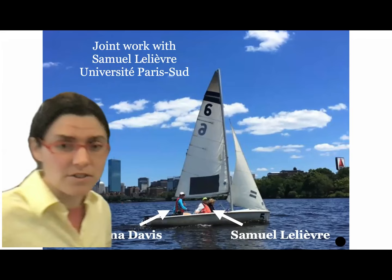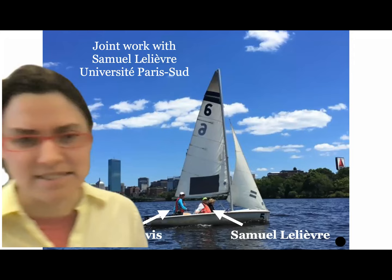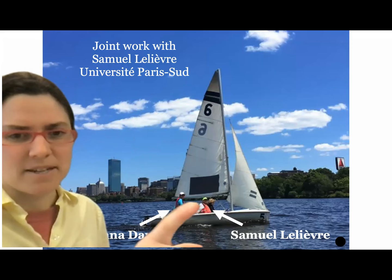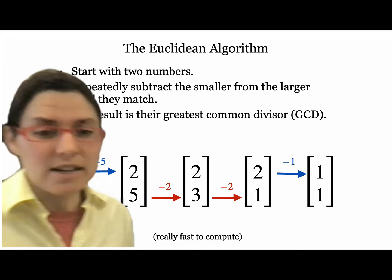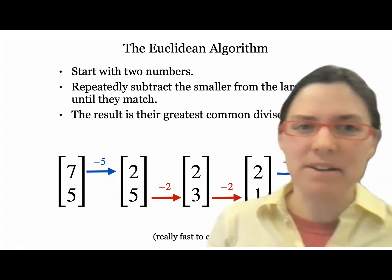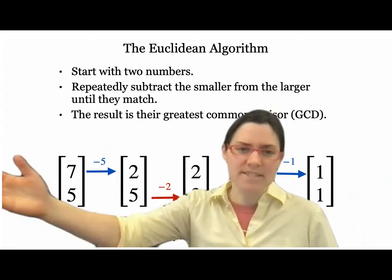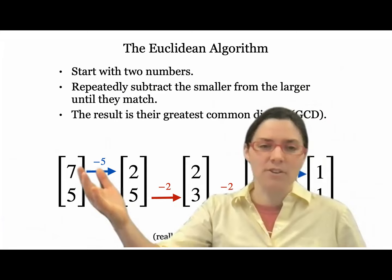All the work in this talk is joint work with Samuel, who's at his university — I just visited him for my spring break in March. We are sailing in Boston in this photo. The process I'm going to describe is basically the Euclidean algorithm wearing different clothes. Let me remind you of the Euclidean algorithm.